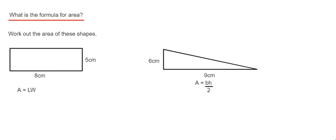Our length of our rectangle is 8 and our width of our rectangle is 5. We just put these into our formula. It'll be 8 times 5, which gives an answer of 40 cm squared.